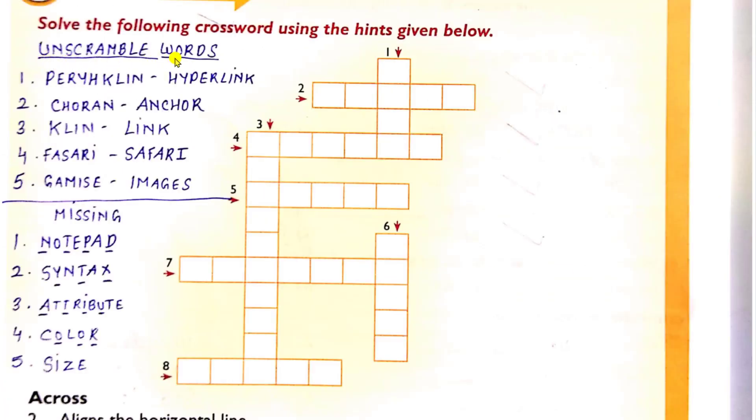Fourth question is unscramble words. You have to write this five words given here in your copy. This is unscramble word and this is its correct answer. In exam, you will get these words and you have to learn the correct answer. This is given here. In exam, you will get this and you have to write this correct answer. So five numbers are there, one to five. You have to write this in your copy.